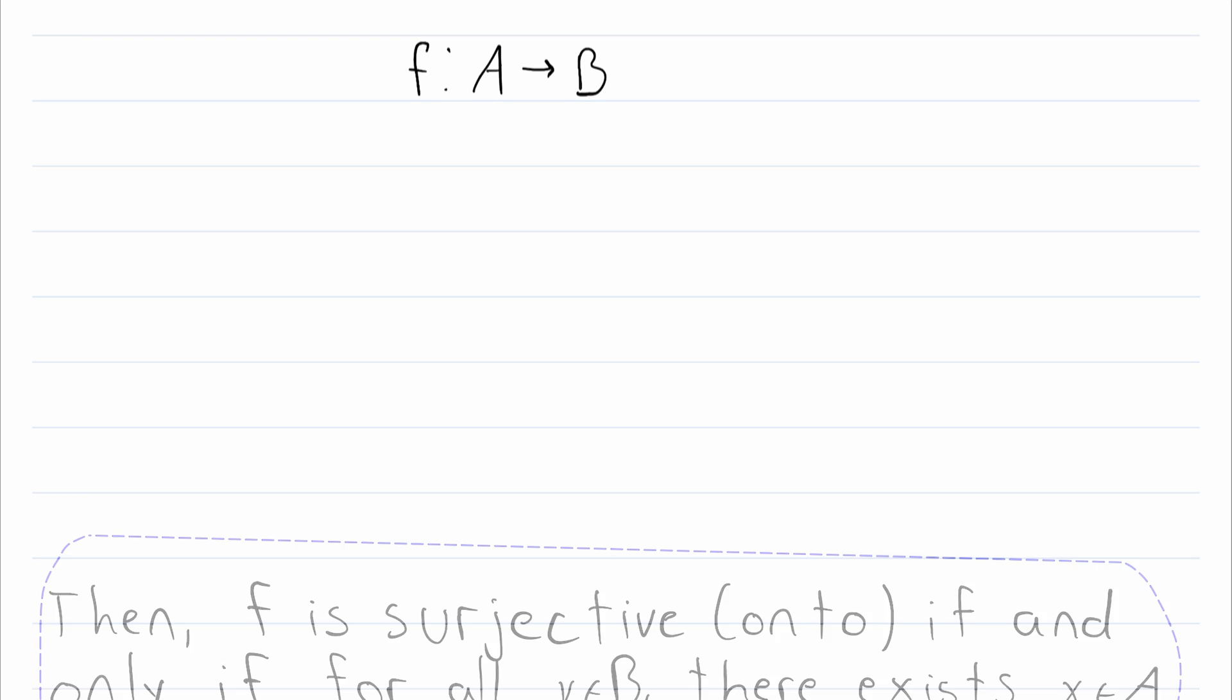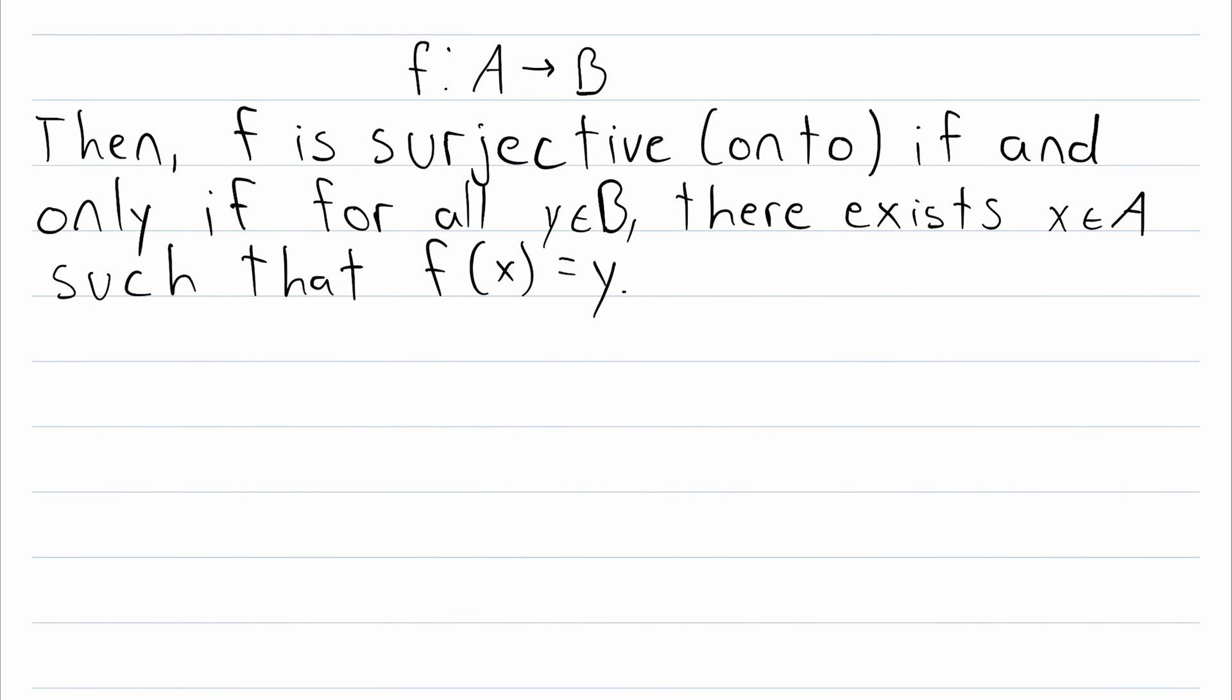Let's say we've got a function f that maps the set A to the set B. Then here is our definition of surjective. The function f is surjective, also sometimes called onto, if and only if for all elements y of the codomain there exists an element x in the domain such that f of x is equal to y.